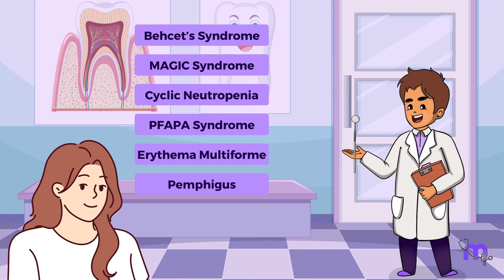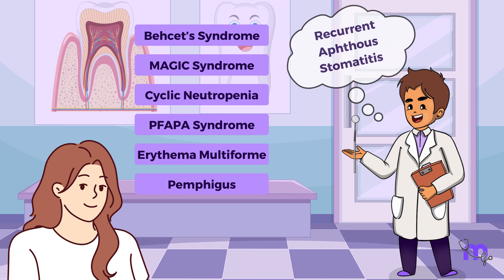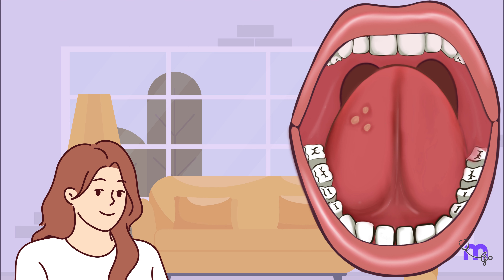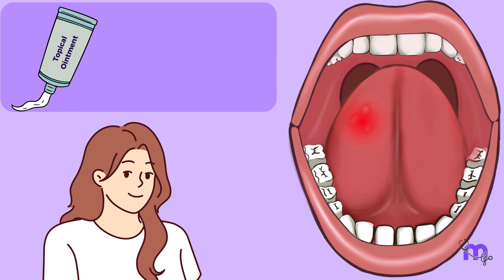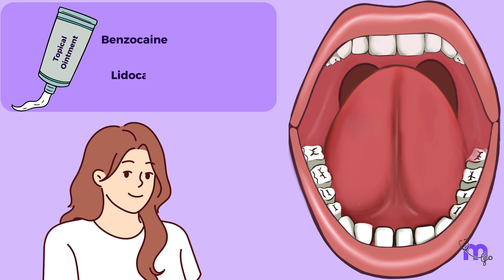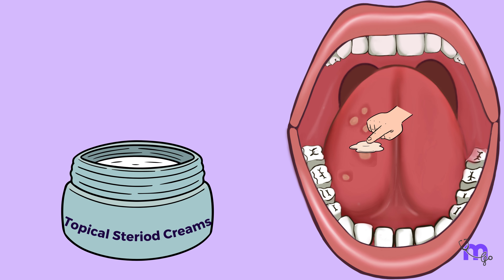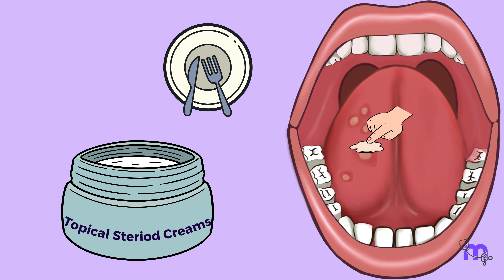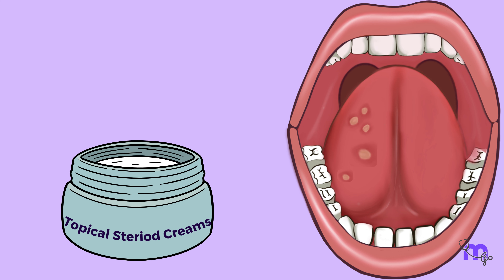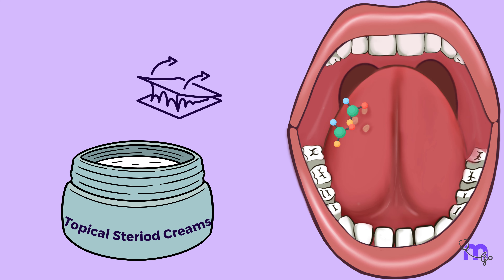Luckily, Maya's case involved minor aphthous ulcers, which typically require minimal intervention. To manage the pain and promote healing, topical ointments combining an anesthetic like benzocaine or lidocaine with a protective base like Orabase are often used. For more severe cases, topical steroid creams containing fluocinonide, betamethasone, or clobetasol can be applied directly to the ulcers after meals and at bedtime, 2 to 3 times a day. These applications often come with an adhesive base to ensure better adherence.